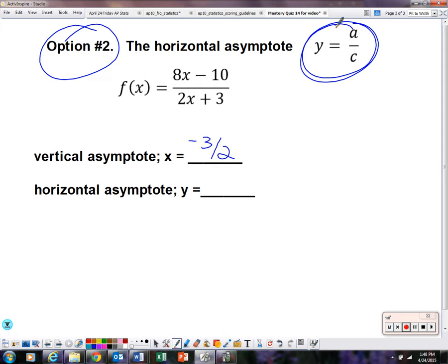Remember what it looks like. If I rewrite this as f of x equals ax plus b over cx plus d, the a is the number in front of x, and c is the number in front of x in the denominator. When it's in this format, this option works. So all it is, is y equals 8 divided by 2, which is 4. That's option number 2 at finding the horizontal asymptote.